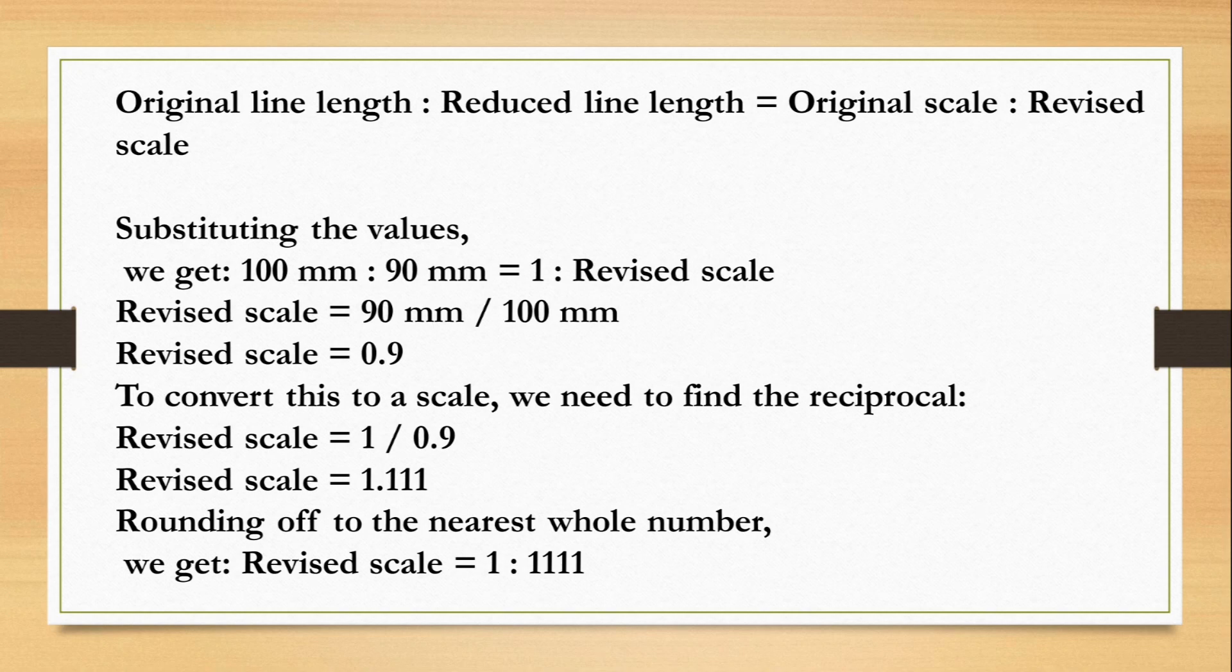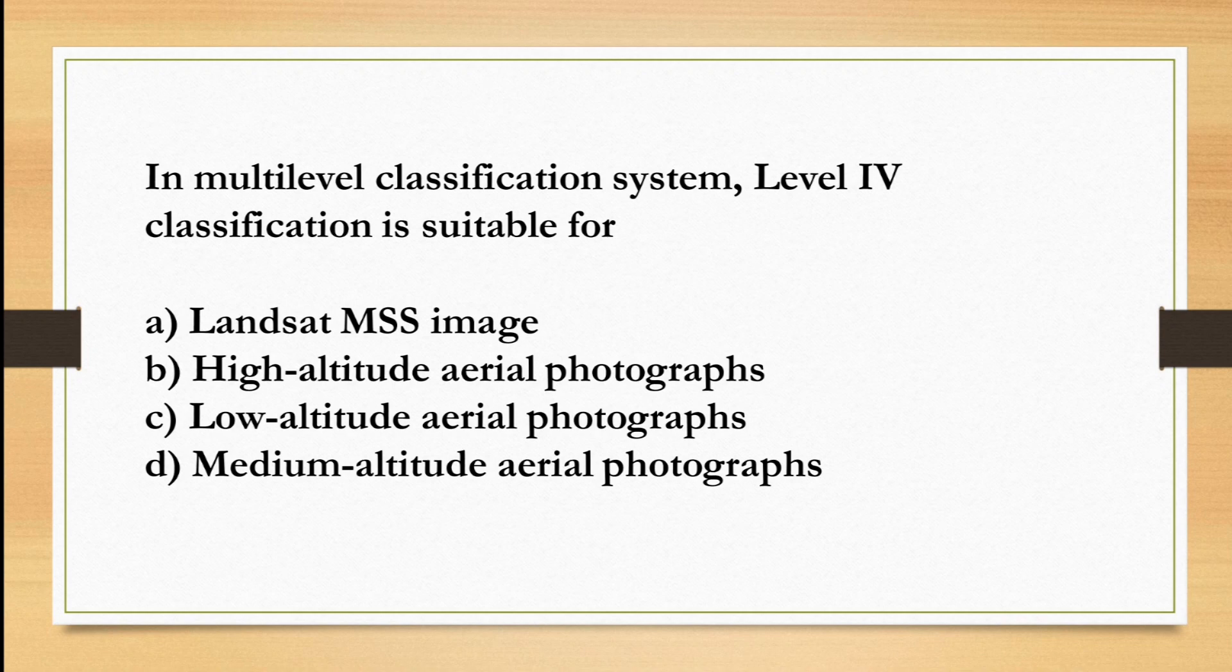The fifth question is, in multi-level classification system, level 4 classification is suitable for what? There are 4 options. Option A is Landsat MSS image, Option B is high altitude aerial photograph, Option C is low altitude aerial photograph, Option D is medium altitude aerial photograph.